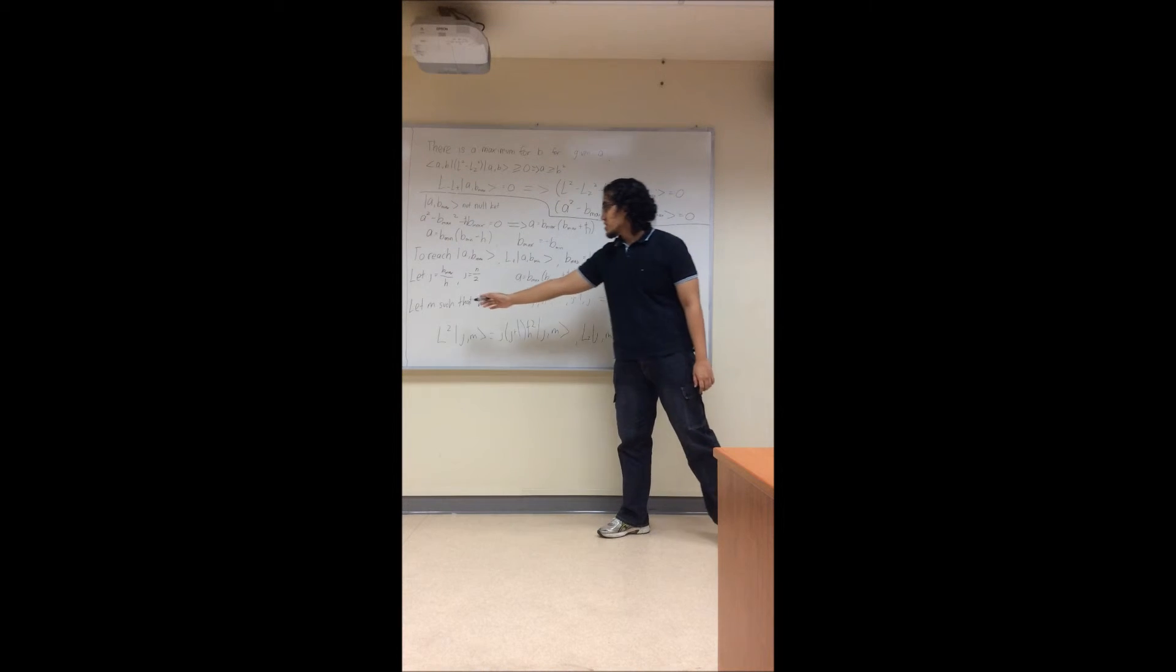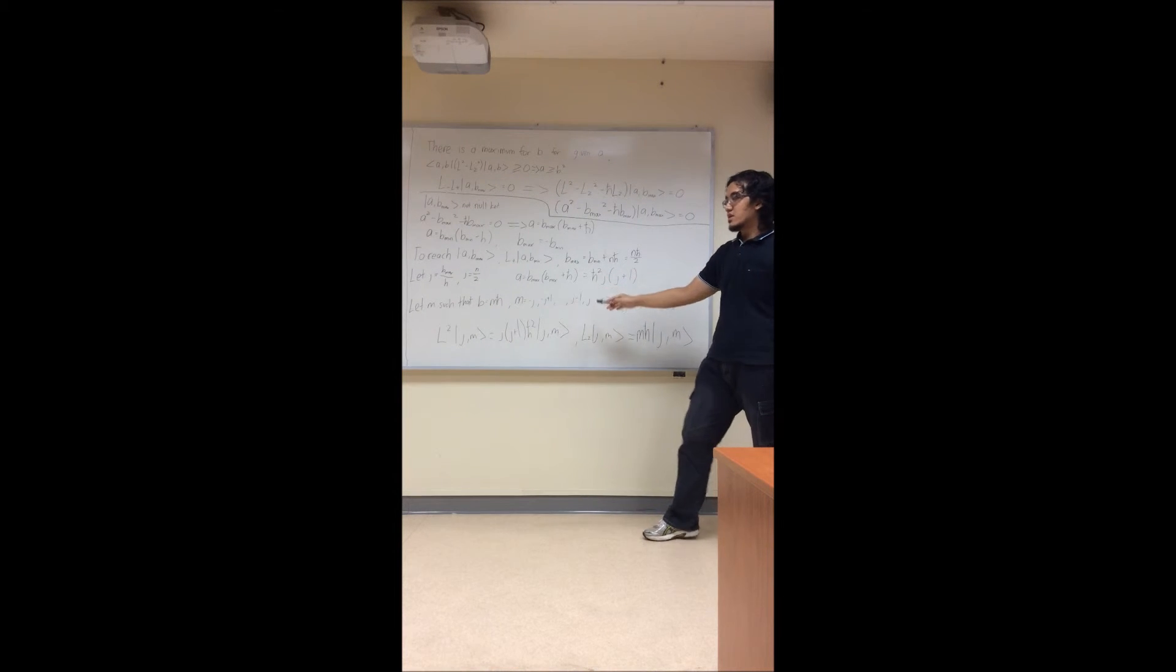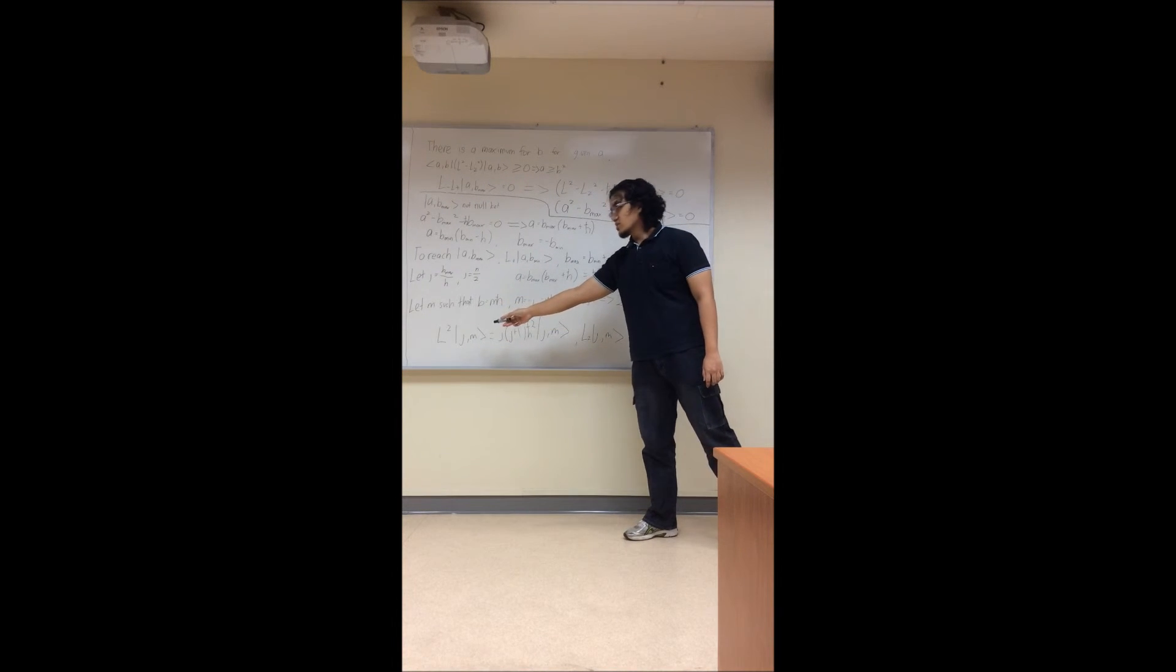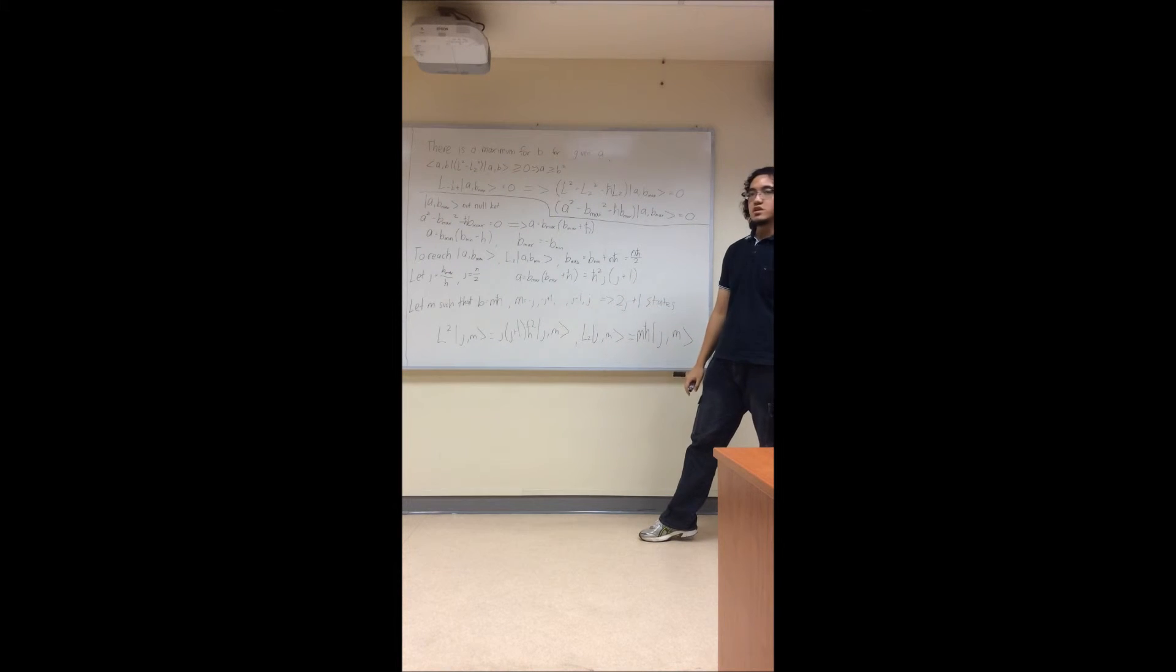Next, Sakurai lets M such that B equals Mℏ, and there are 2J plus 1 states for M. Then in the end, that's how he sets the eigenvalues for L² and LZ.